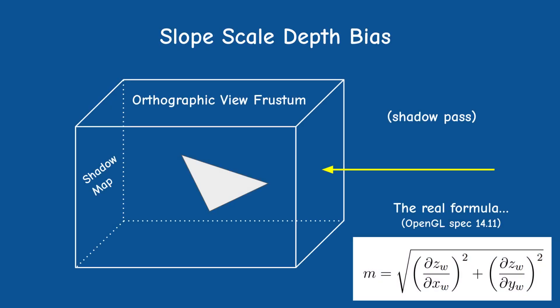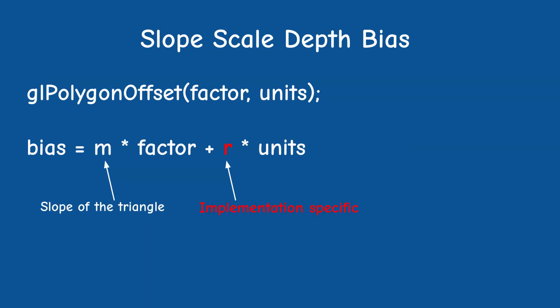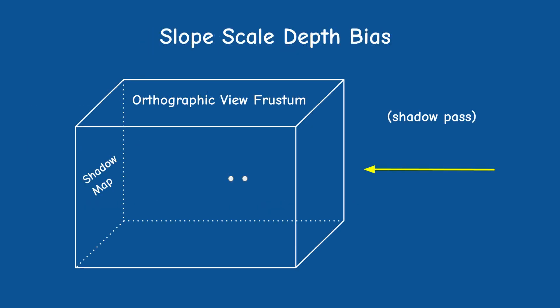The slope is based on the change of z across the triangle face divided by the change in both x and y. When the triangle is perpendicular to the light vector there is no change in z, and as one vertex is tilted away the change in z increases. R is implementation-dependent, meaning this feature may behave differently on different GPUs. R simply needs to be the smallest value that guarantees a depth difference, and it will be calculated by the GPU automatically. I encourage you to play with this feature and see for yourself.